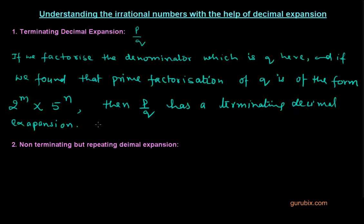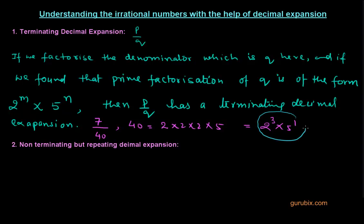Let me give you an example. Suppose we have 7 over 40. If we factorize 40, we get 2 × 2 × 2 × 5, which we can write as 2 to the power 3 multiplied by 5 to the power 1. We find that this is of the form 2 to the power M multiplied by 5 to the power N, so this rational number will have a terminating decimal expansion.